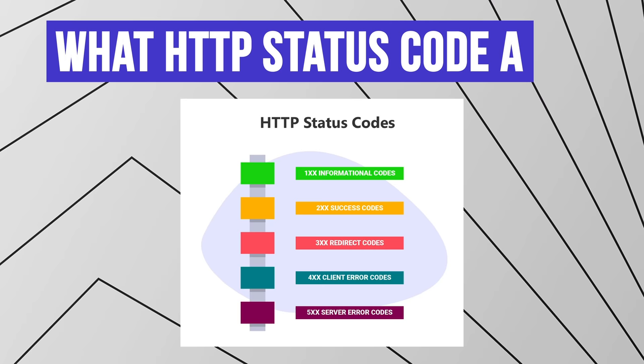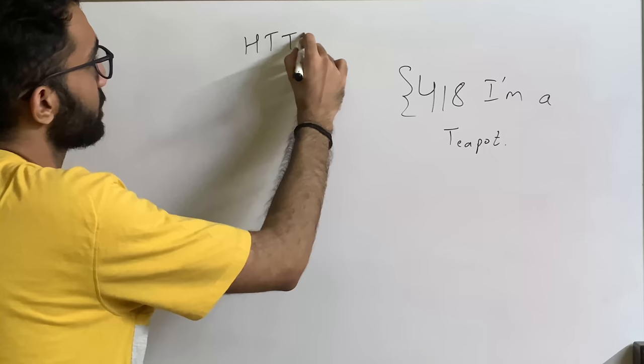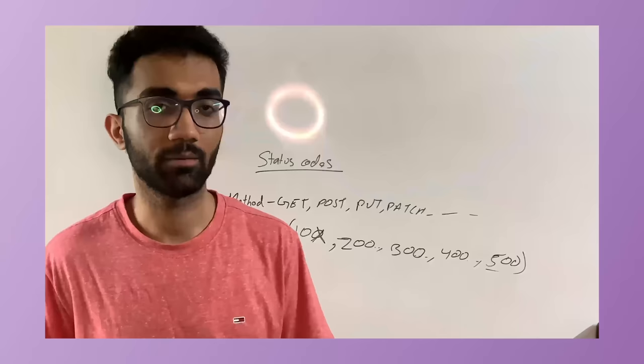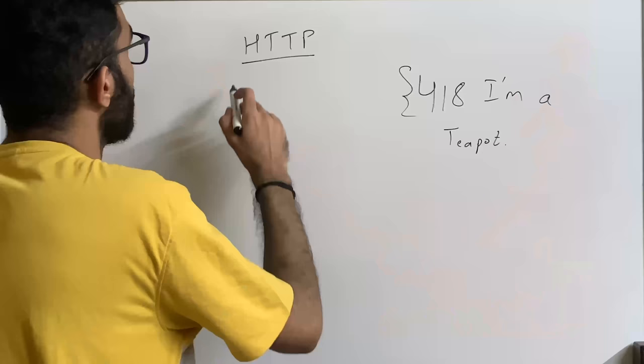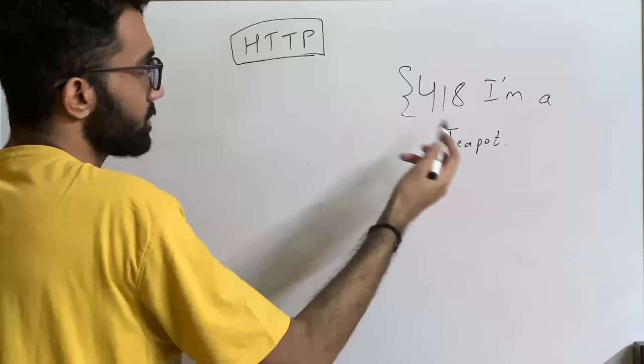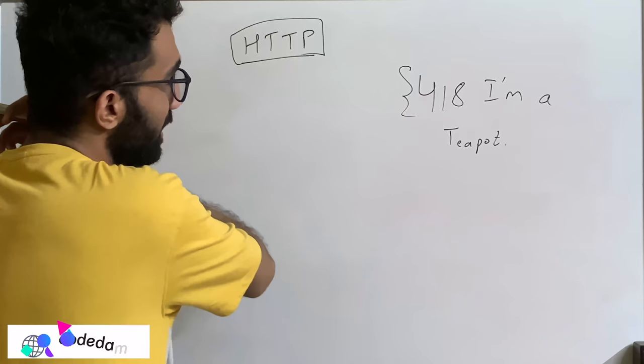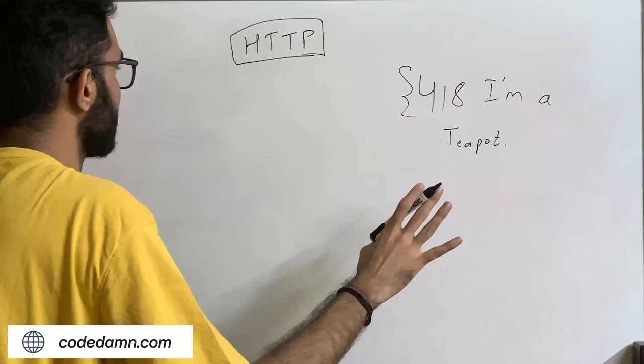Before getting to 418, let's first look at what HTTP status codes are. HTTP is a protocol we've discussed a bit in the REST versus GraphQL video, which you can find in the description. HTTP status codes are a collection of numbers which are not continuous in nature, so there could be just a few numbers in a certain range.